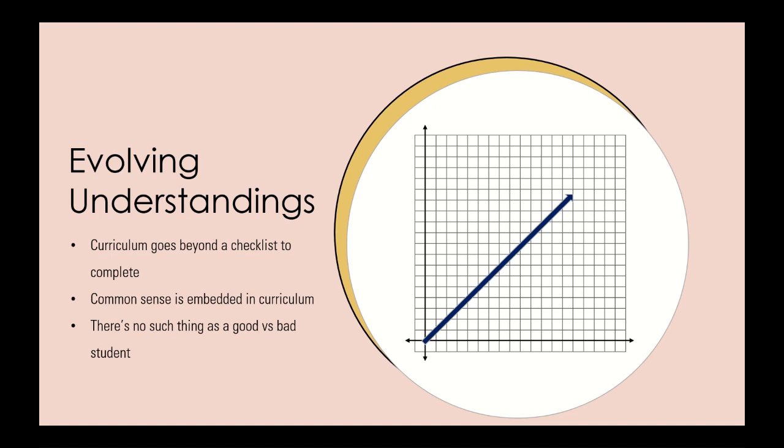Hidden curriculum, for example. The indirect learnings that aren't as much taught by the teacher, but implied by education as a whole. These can be both positive and negative. There's null curriculum as well. The stuff that schools avoid, but inadvertently send messages about by not teaching them.